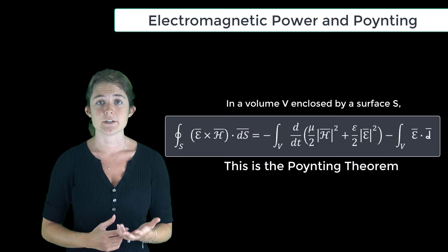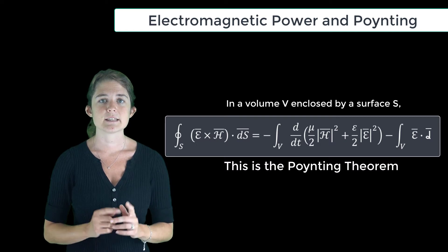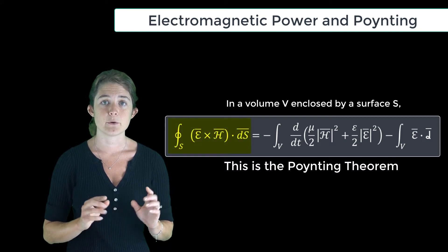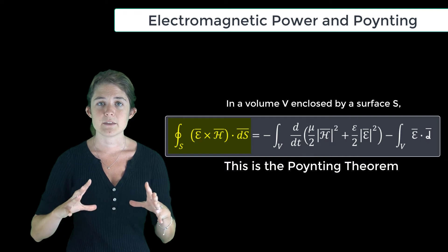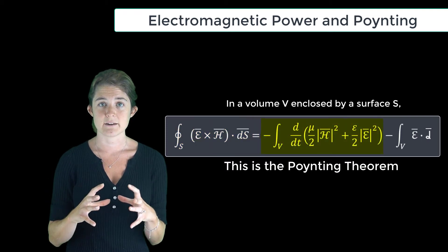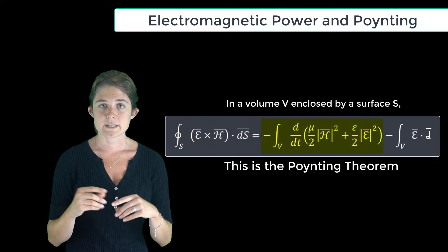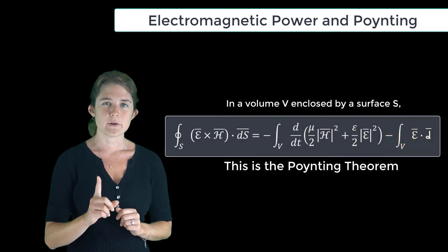This relationship is formally known as the Poynting theorem. It looks complicated, but it's actually just a statement of conservation of energy. This says that the net electromagnetic power flowing into a volume must be either stored in the electric and magnetic fields within that volume or dissipated as ohmic losses.